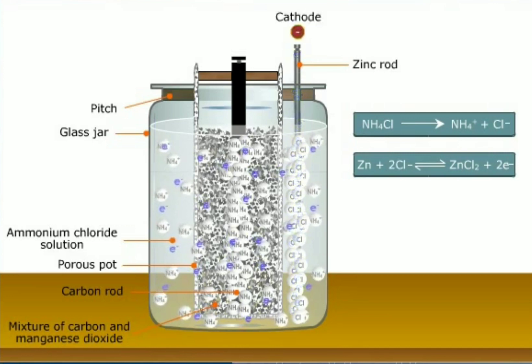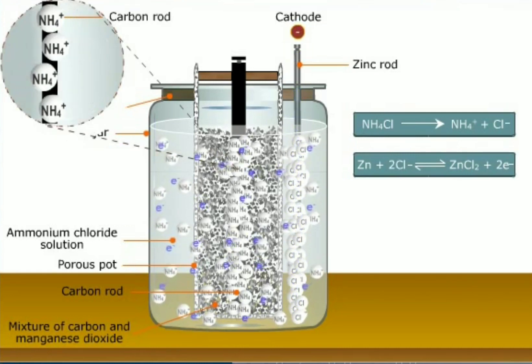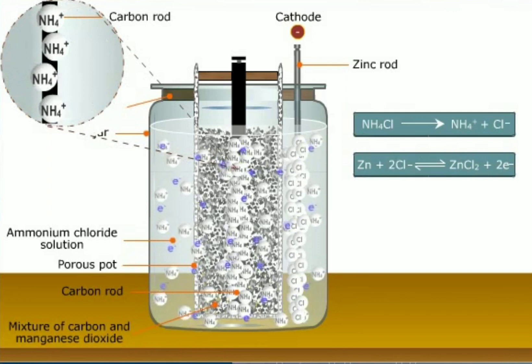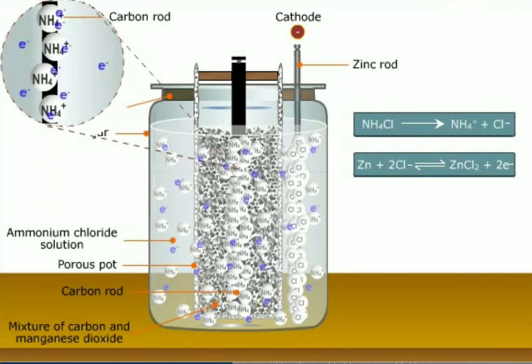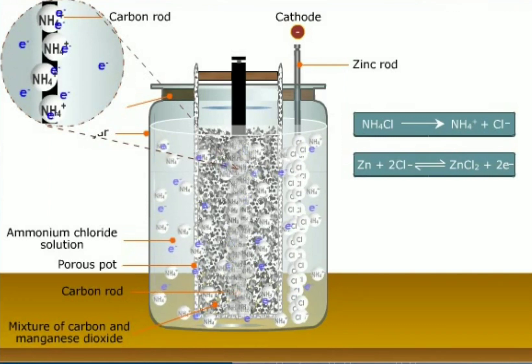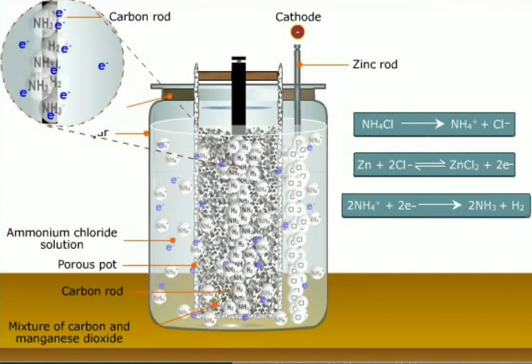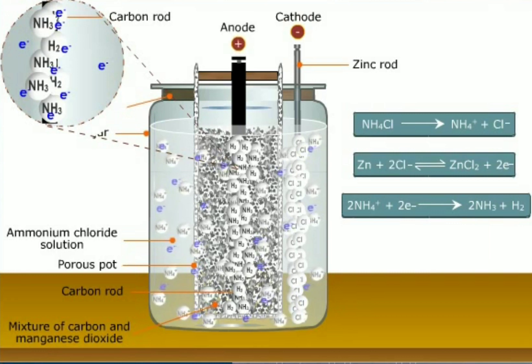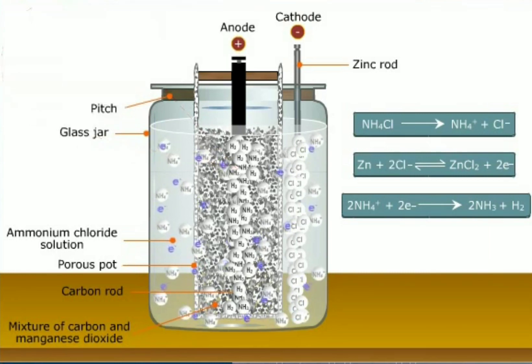On the other hand, ammonium ions move to the carbon rod. The free electrons of the carbon rod neutralize the ammonium ions forming ammonia and hydrogen gas. As a result, the carbon rod attains positive charge due to deficiency of electrons. Thus the carbon rod becomes the anode, the positive electrode.